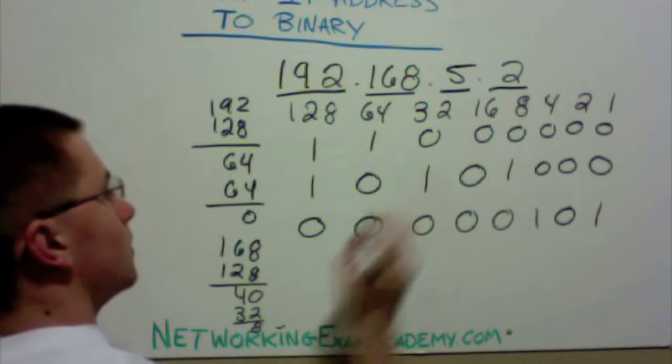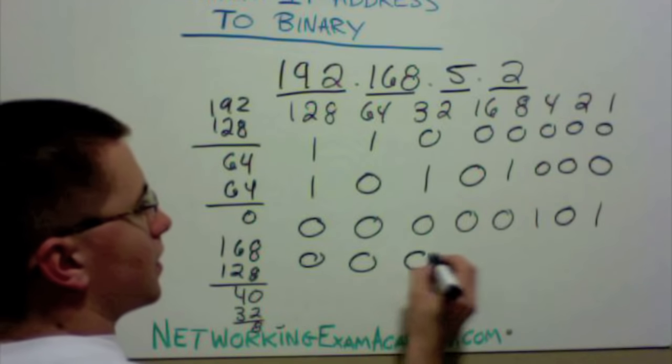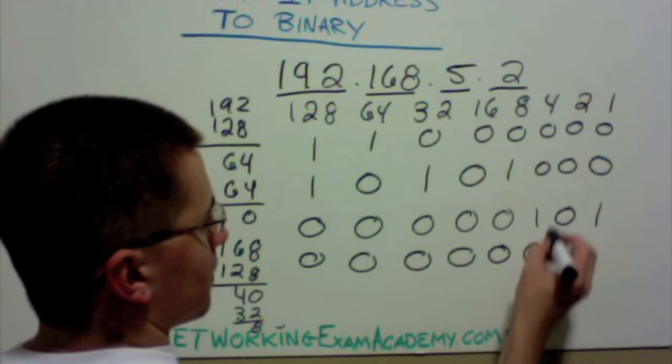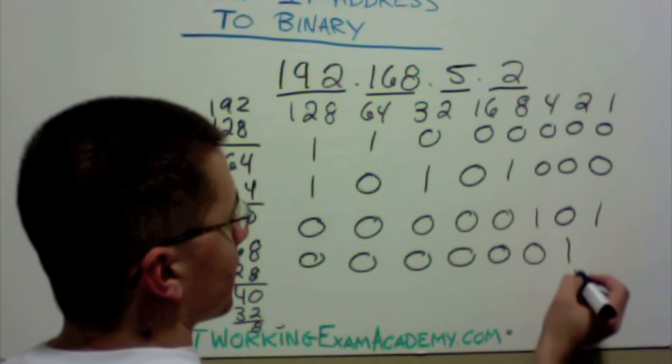Now let's do 2. Same thing here. None of those go into 2. 2 goes into 2, remainder of 0.